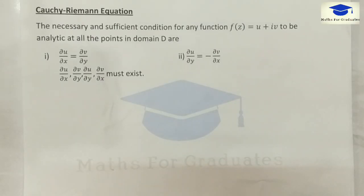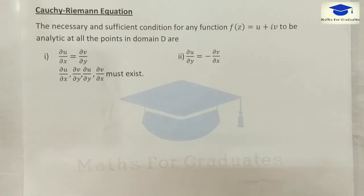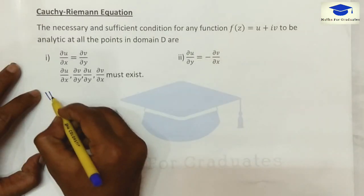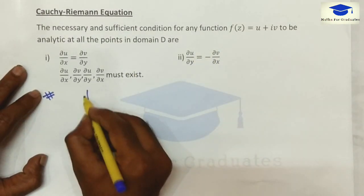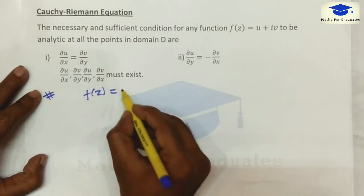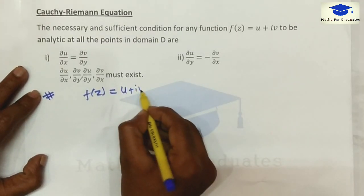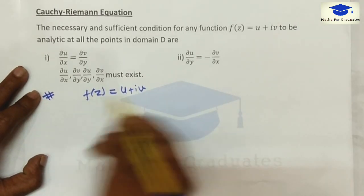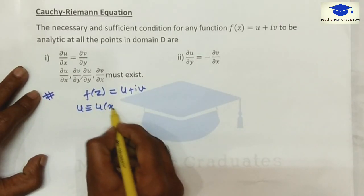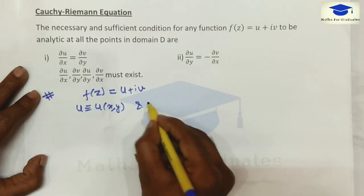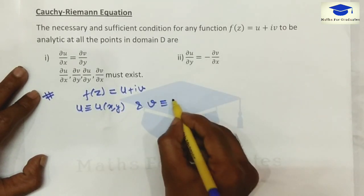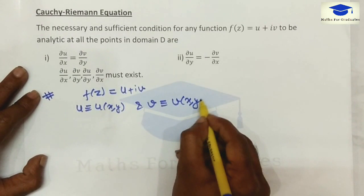Today's video is about a theorem known as the Cauchy-Riemann equations for the verification of a function — to check whether the given function is analytic or not. Suppose we have a function f given by u plus i times v, where u is a function of x and y, and v is also a function of x and y.